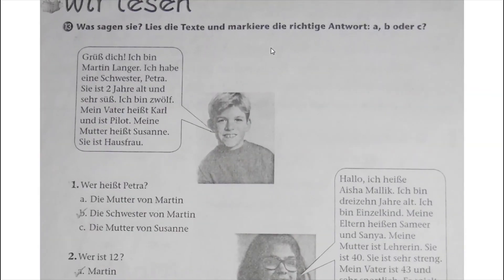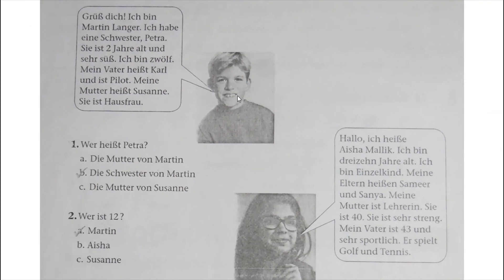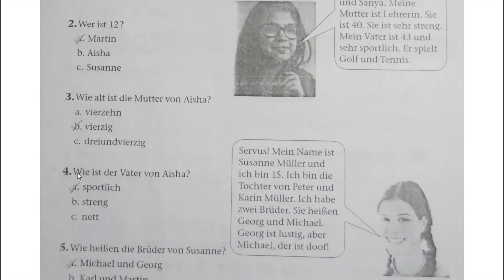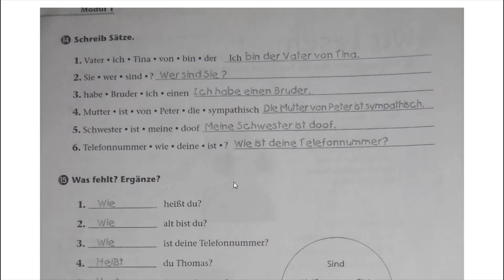Number thirteen: read the text and find the answers. Number one: Wie heißt die Schwester von Martina? Number two: Wie alt ist Martin? Number three: Petra ist die Mutter von Aisha - Frage vier. Wie heißt der Vater von Aisha? Number five: Wie heißen die Brüder von Susanna? - Michelle und Georg.